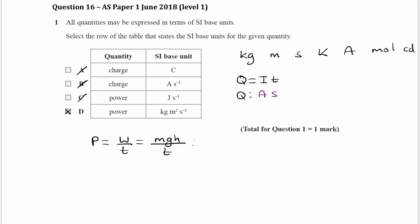And so that would be, M mass would be kilograms. G, which is acceleration due to gravity, will be meters per second squared. H is distance, is height. That would be meters. And time would be seconds. And if we put all that together, we end up with kilograms, meters squared. And these two things combine to give S to the minus 3. And that is what we have here.